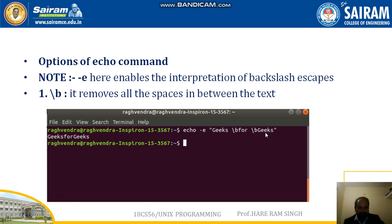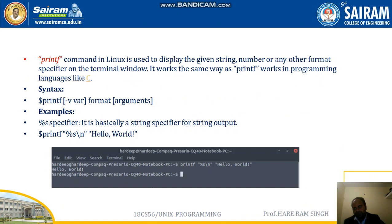Options of the echo command: the '-e' option enables interpretation of backslash escapes. Backslash B removes all the spaces in between the text. For example, 'echo -e geeks \b geeks' — what '-e' does is it removes all the spaces among the words, like 'geeks for geeks' becomes 'geeksforgeeks' with all spaces removed.